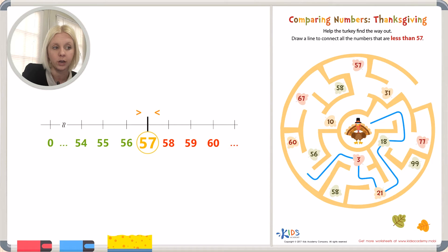We've got a couple of choices. We can either go to 60 or 56. Which one is going to be less than 57? 56 is less than 57. It's even on our number line that we drew. 60 is more than or greater than, so we're going to go to 56.